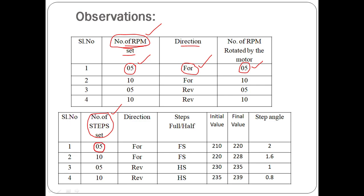For number of steps mode, if you set it to five steps in the forward direction, there are also full step and half step options. The stepper motor we have in the lab rotates 1.8 degrees per step, so the total number of steps for one complete rotation is 360 divided by 1.8, which equals 200 steps for 360 degrees.